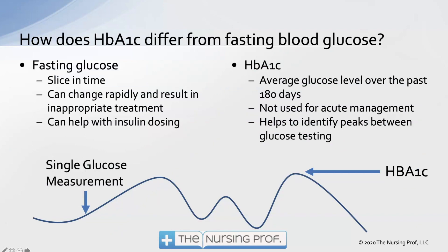How does hemoglobin A1c differ from a fasting blood glucose? Take a look at this graph at the bottom of the page — you'll see the glucose level going up and down, partly due to insulin treatment and meals throughout the day. If we take a single glucose measurement, maybe before or after eating, we're getting one little slice in time and not a picture of overall blood glucose. However, the hemoglobin A1c is going to measure that peak — see that one peak toward the right — and it's going to hold on to that for about the next 180 days. So we usually think of hemoglobin A1c measurements in terms of two or three months, rather than single glucose measurements which we may be doing several times a day.